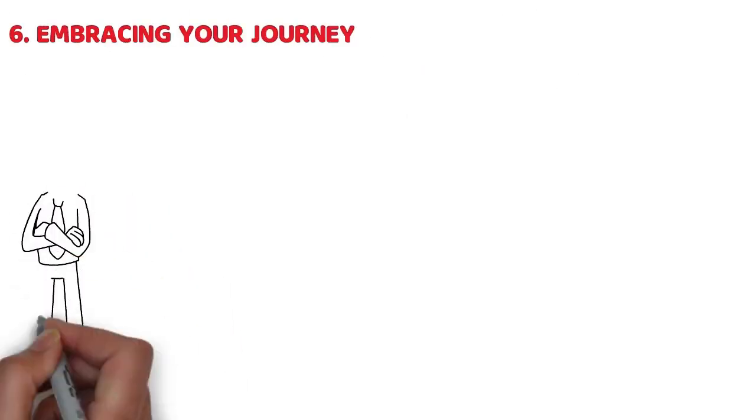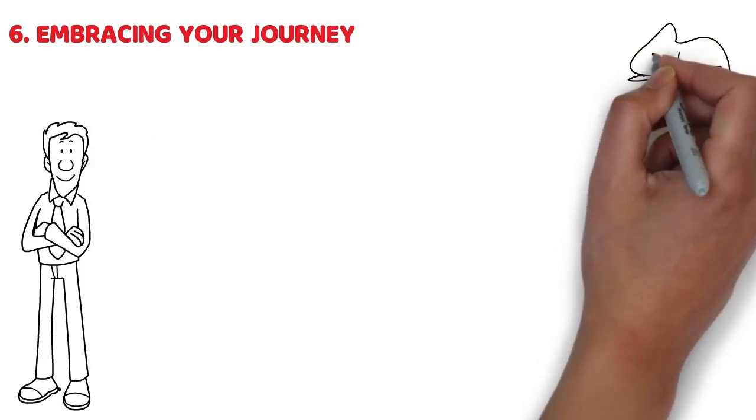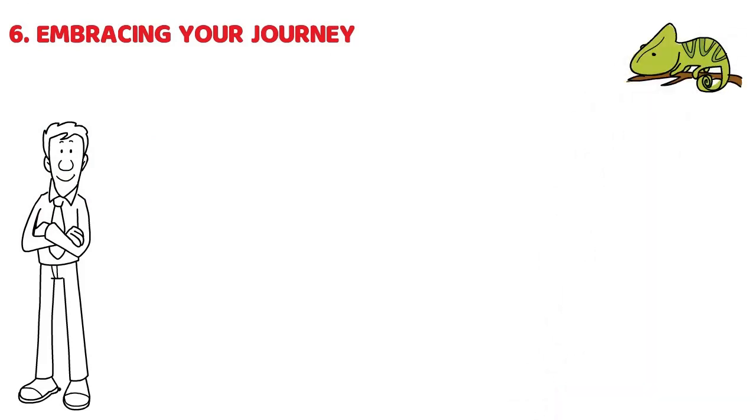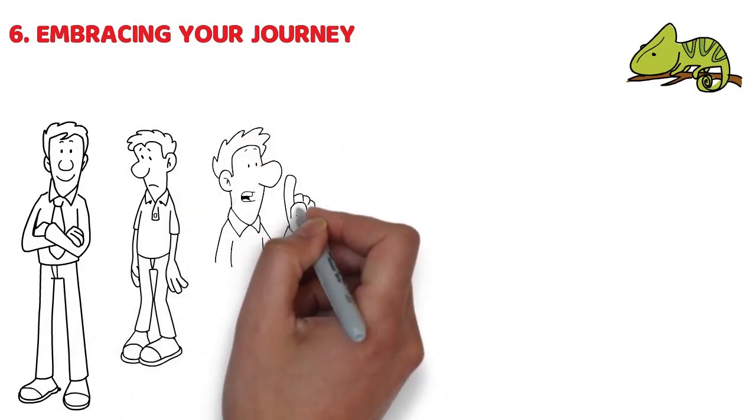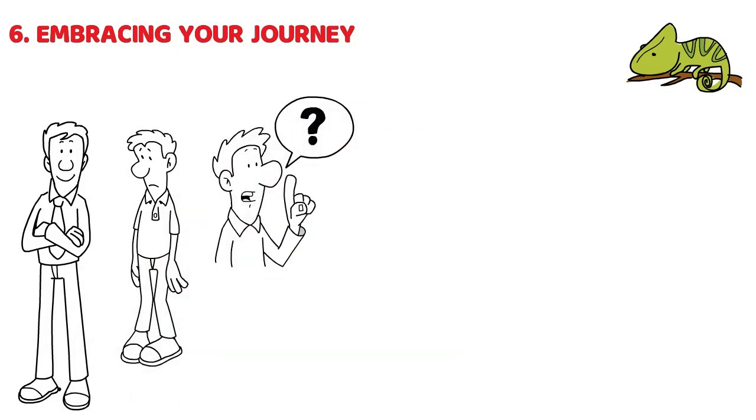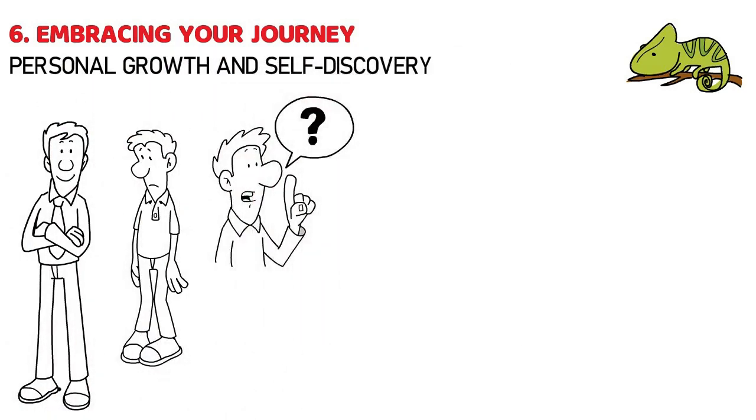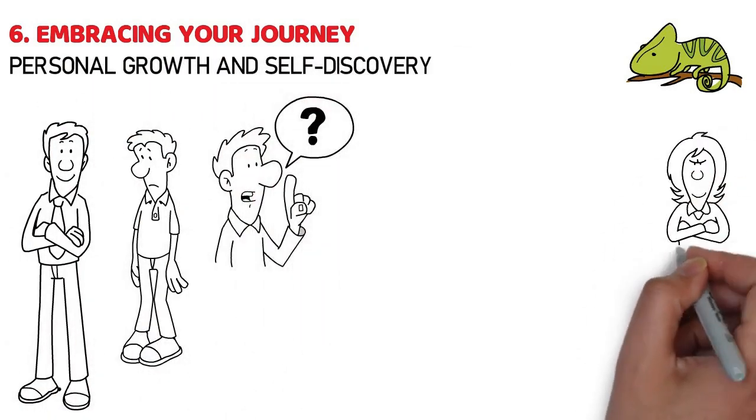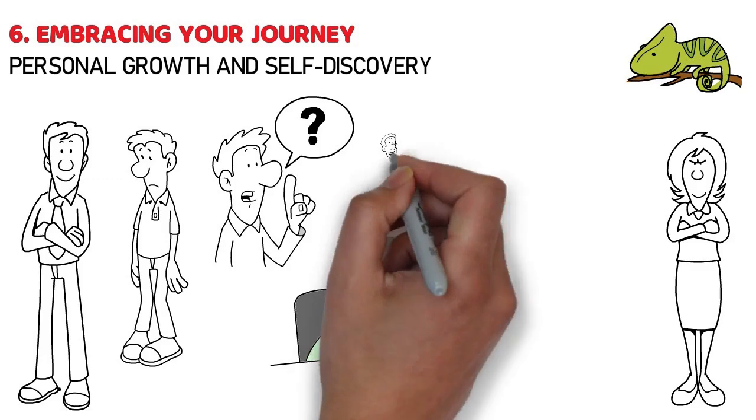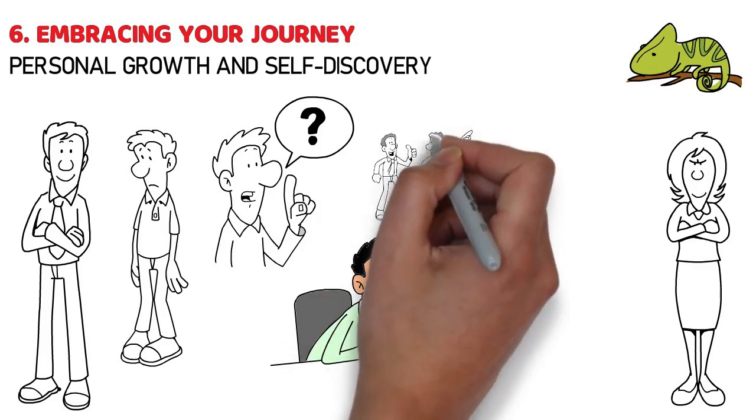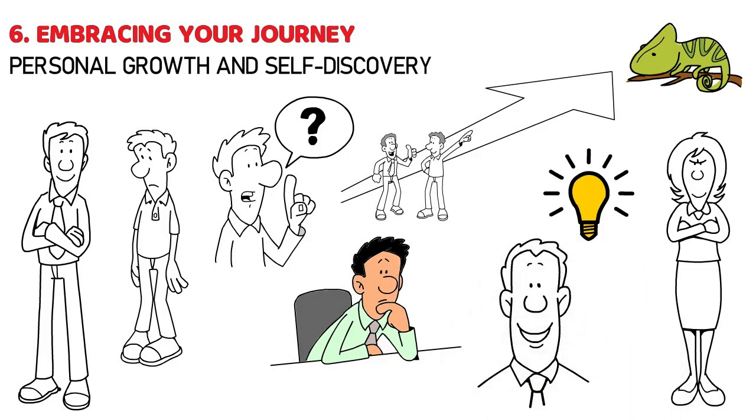Embracing your journey. Now, let's shift focus a bit and talk about you. Yeah, you. Being in a relationship with someone who's like a chameleon, changing colors depending on where she is, can make you feel like you're losing a bit of yourself. But here's the thing. It's also an opportunity. An opportunity for what, you ask? For personal growth and self-discovery. Think about it. When you're constantly adapting to your wife's moods and needs, it's easy to forget about your own dreams, passions, and what makes you tick. But it's crucial to remember that your journey matters too. It's about rediscovering what lights you up, what gets you out of bed in the morning with a smile on your face.